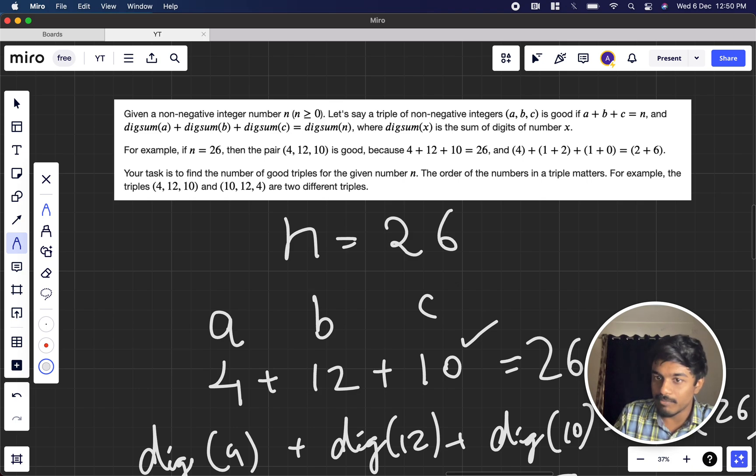The order of the numbers matters here. For example, 4, 12, 10 is different from 10, 12, 4. Both are very much different. They are not the same.